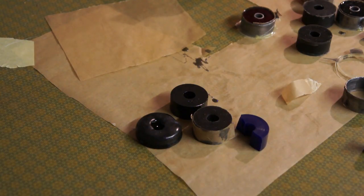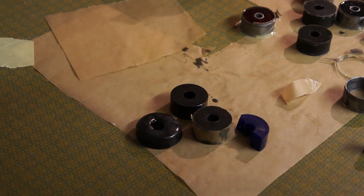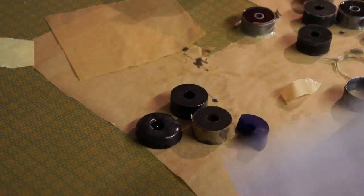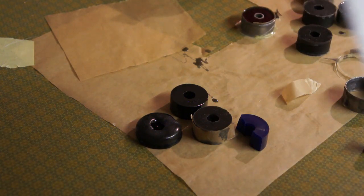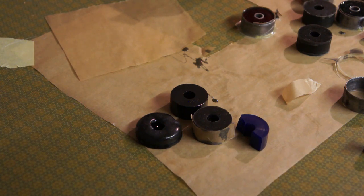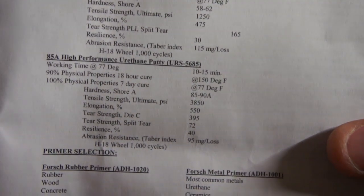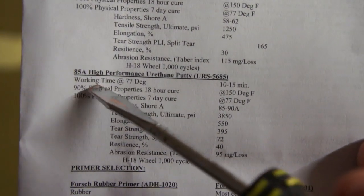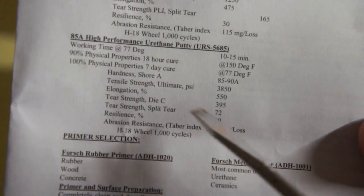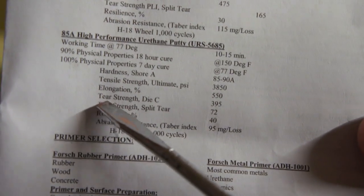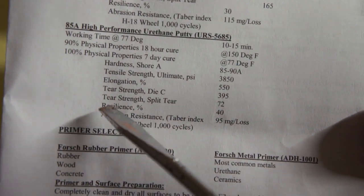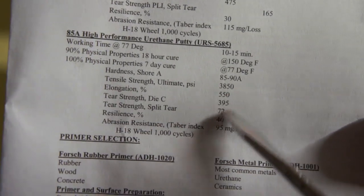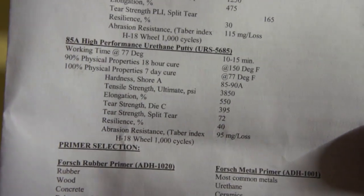Oh, here's actually the product sheet. It didn't come with a product sheet for the actual one I got, I got the high performance, 80A high performance, but I don't know if this will focus, but you can see here's the 85A high performance, and you can see here all the tear strength and the tensile strength, and all the numbers listed there.